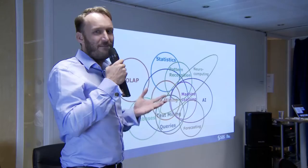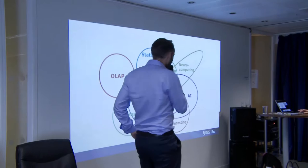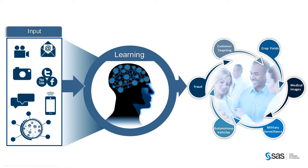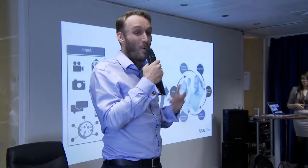But primarily, what are we trying to do as an organisation? Really, what we as SAS are trying to do is fundamentally make as many decisions as possible in as automated a way as possible. That's primarily what we're trying to do.